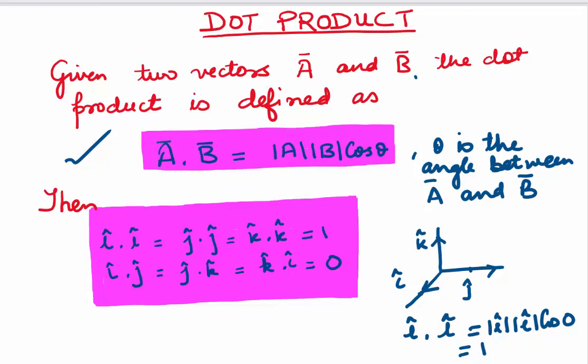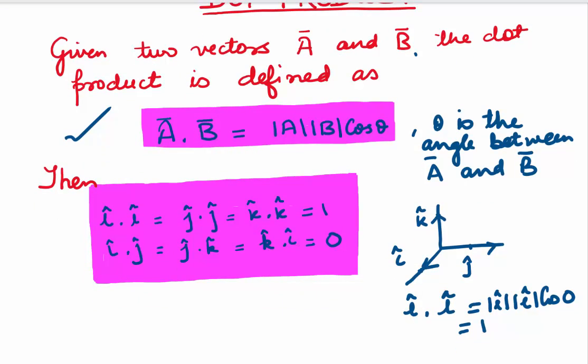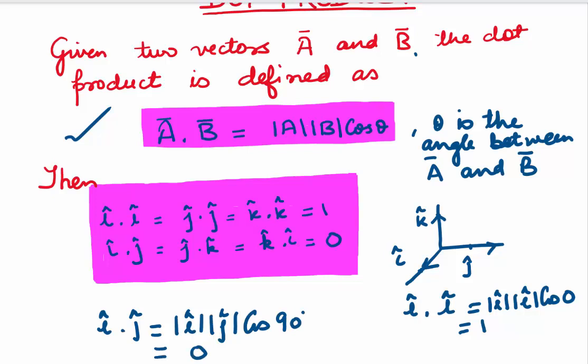When we find the dot product of i and j, the angle between the two is 90 degrees. So i dot j equals modulus of i times modulus of j times cosine of 90 degrees. Cosine 90 is zero, so the dot product of two perpendicular unit vectors i and j is zero. Similarly, j dot k equals zero and k dot i equals zero.